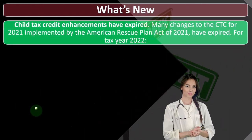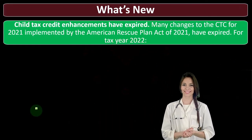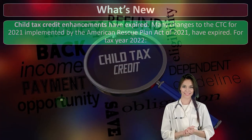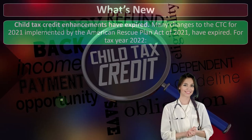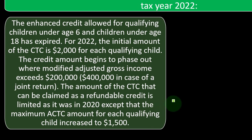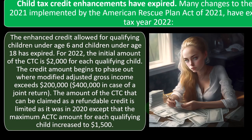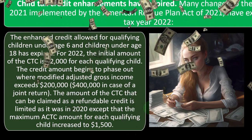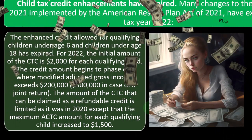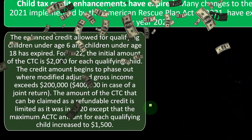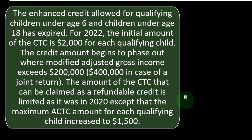Child tax credit enhancements have expired. Many changes to the CTC implemented by the American Rescue Plan Act of 2021 have expired for tax year 2022. The enhanced credit allowed for qualifying children under age six and children under age 18 has expired. For 2022, the initial amount of the CTC is $2,000 for each qualifying child. The credit begins to phase out where modified adjusted gross income exceeds $200,000, or $400,000 in the case of a joint return.